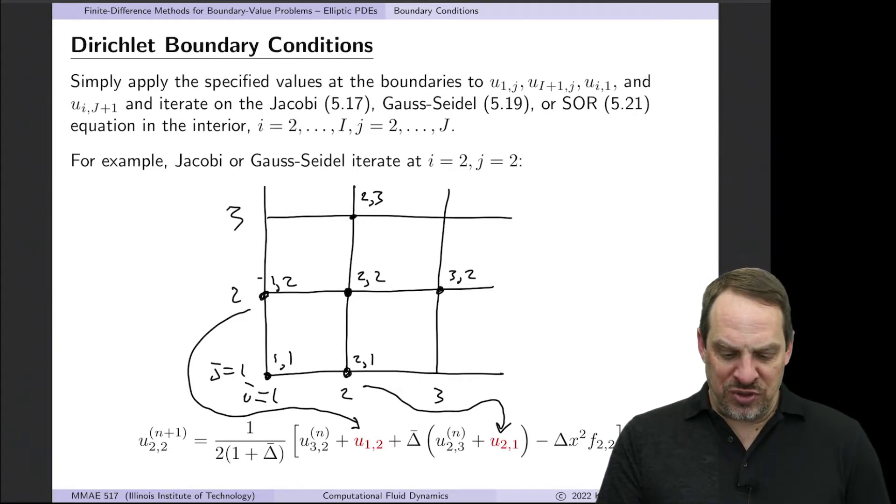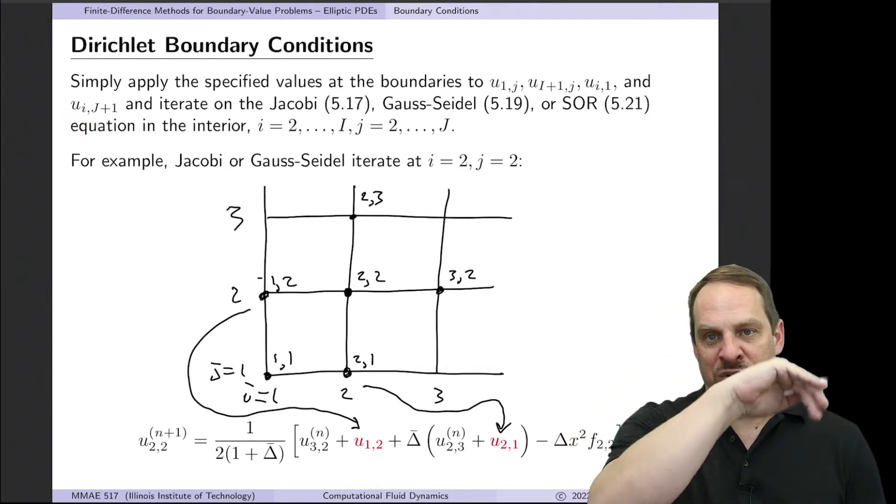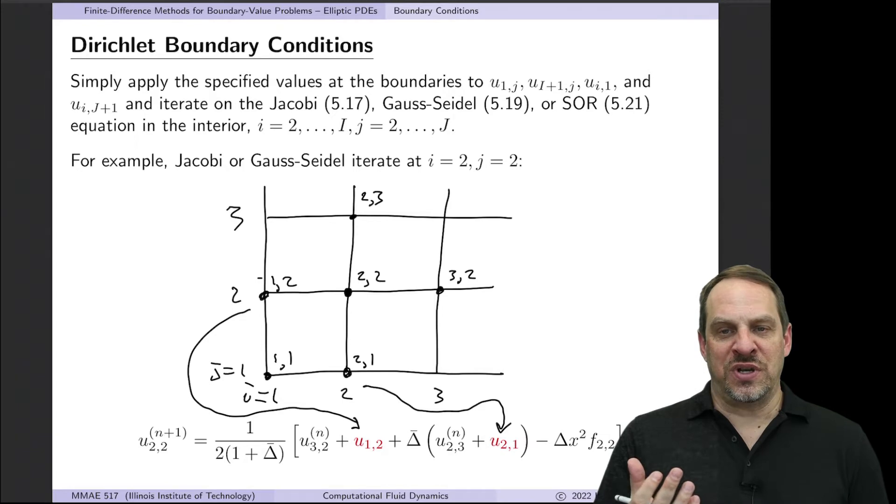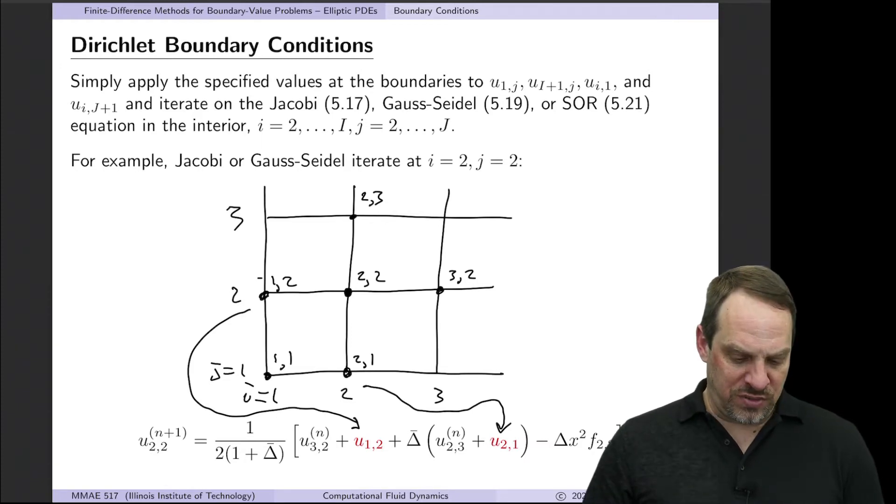So we can simply put those in for U1J, U capital I plus 1J, Ui1, and Ui capital J plus 1. So at every point on the boundary where you know the value of U. So in heat transfer context, this would be an isothermal boundary condition. Just put the temperature and put it right in the two-dimensional array for U.